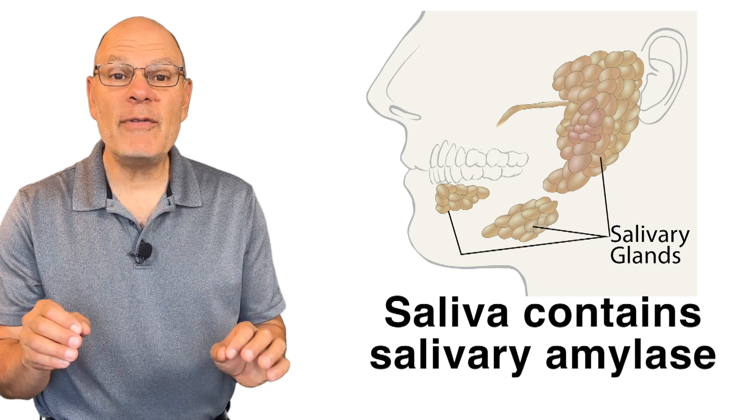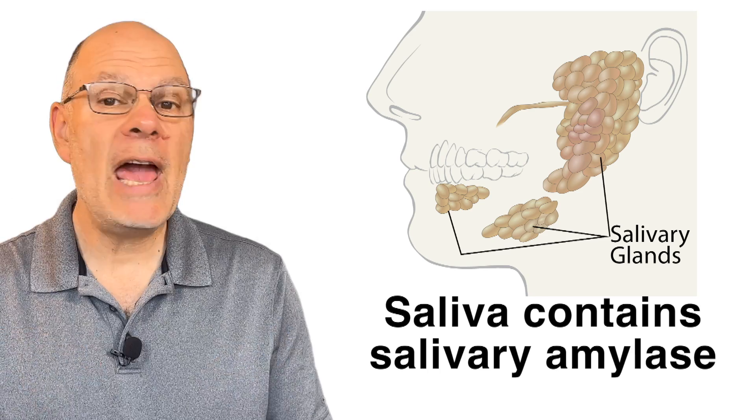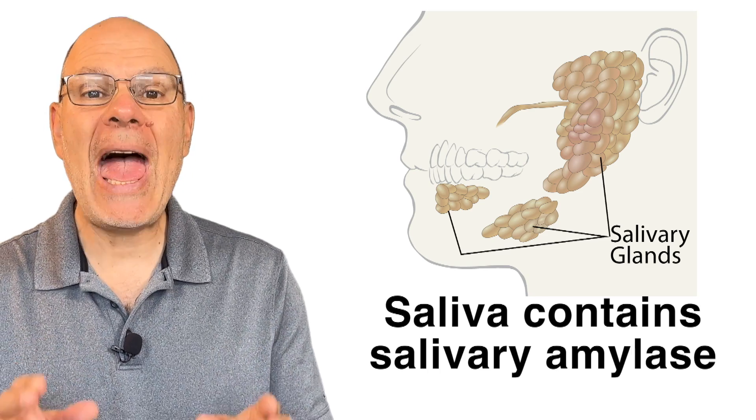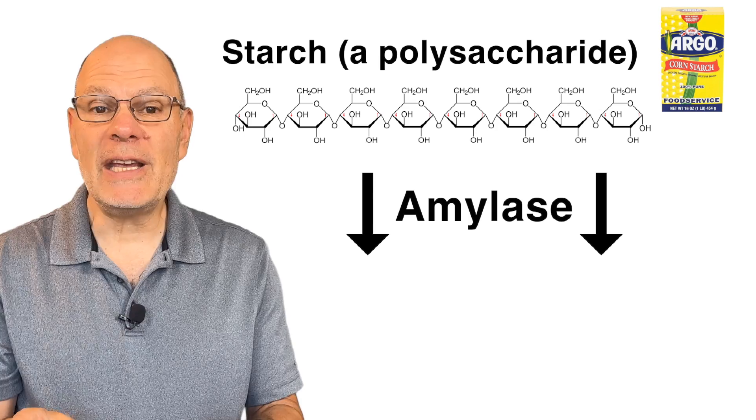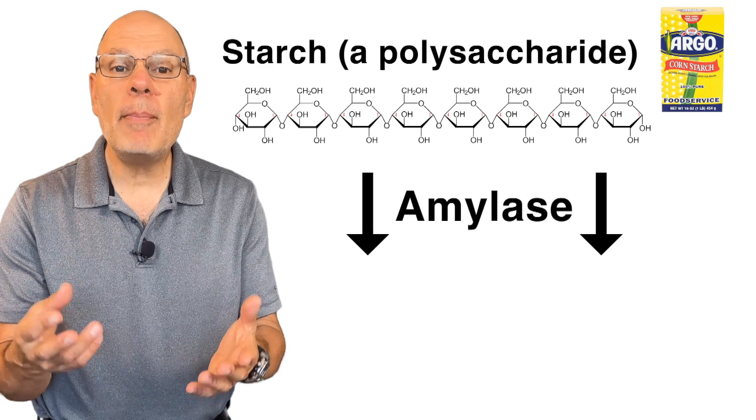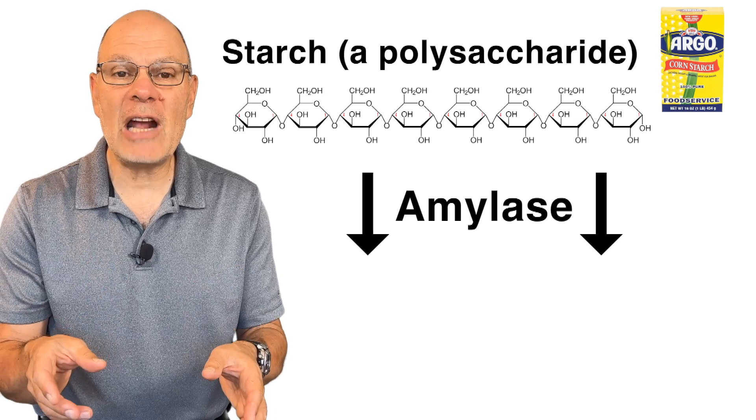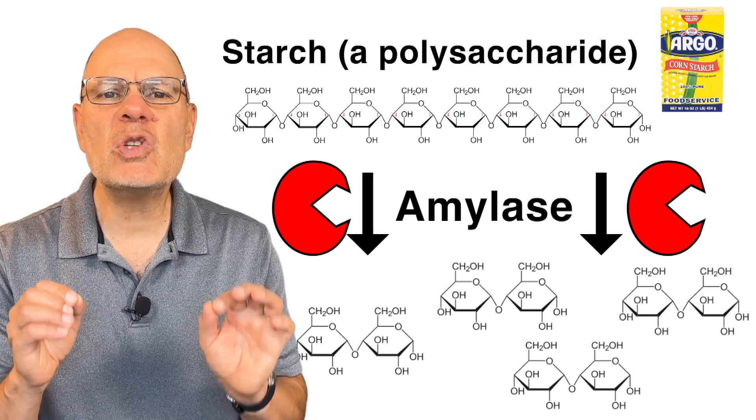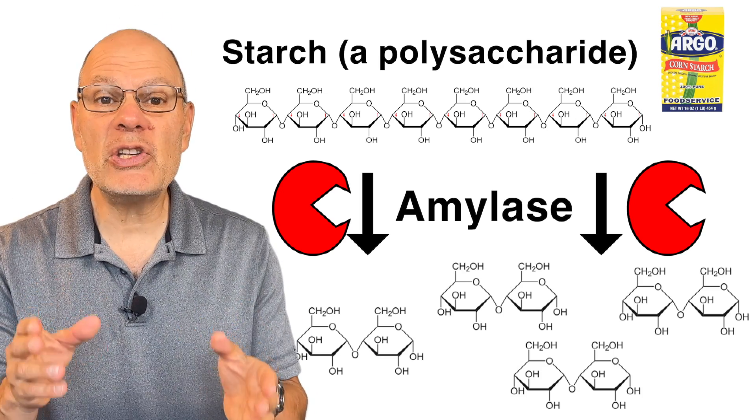In your mouth, your salivary glands secrete saliva, and within saliva is the enzyme amylase. Enzymes are specific, and amylase's function is to take starch, a complex carbohydrate, a polysaccharide, and to break it down into smaller molecules that your cells can use.